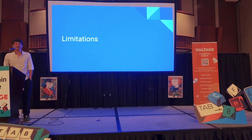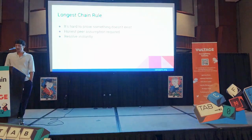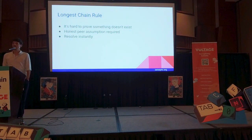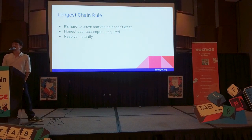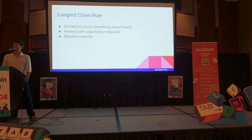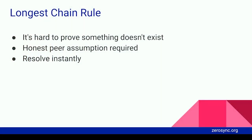Everything is great, but as always in life, there are limitations and caveats. First of all, we cannot prove the longest chain rule. It's hard to prove that something does not exist — I cannot give you a proof that there is no longer chain. That's quite impossible. So as with Bitcoin itself, you still require the honest peer assumption. You have to be connected to some peer-to-peer network, and if there is at least one honest peer, then you can easily resolve conflicts and instantly determine what the longest chain is.